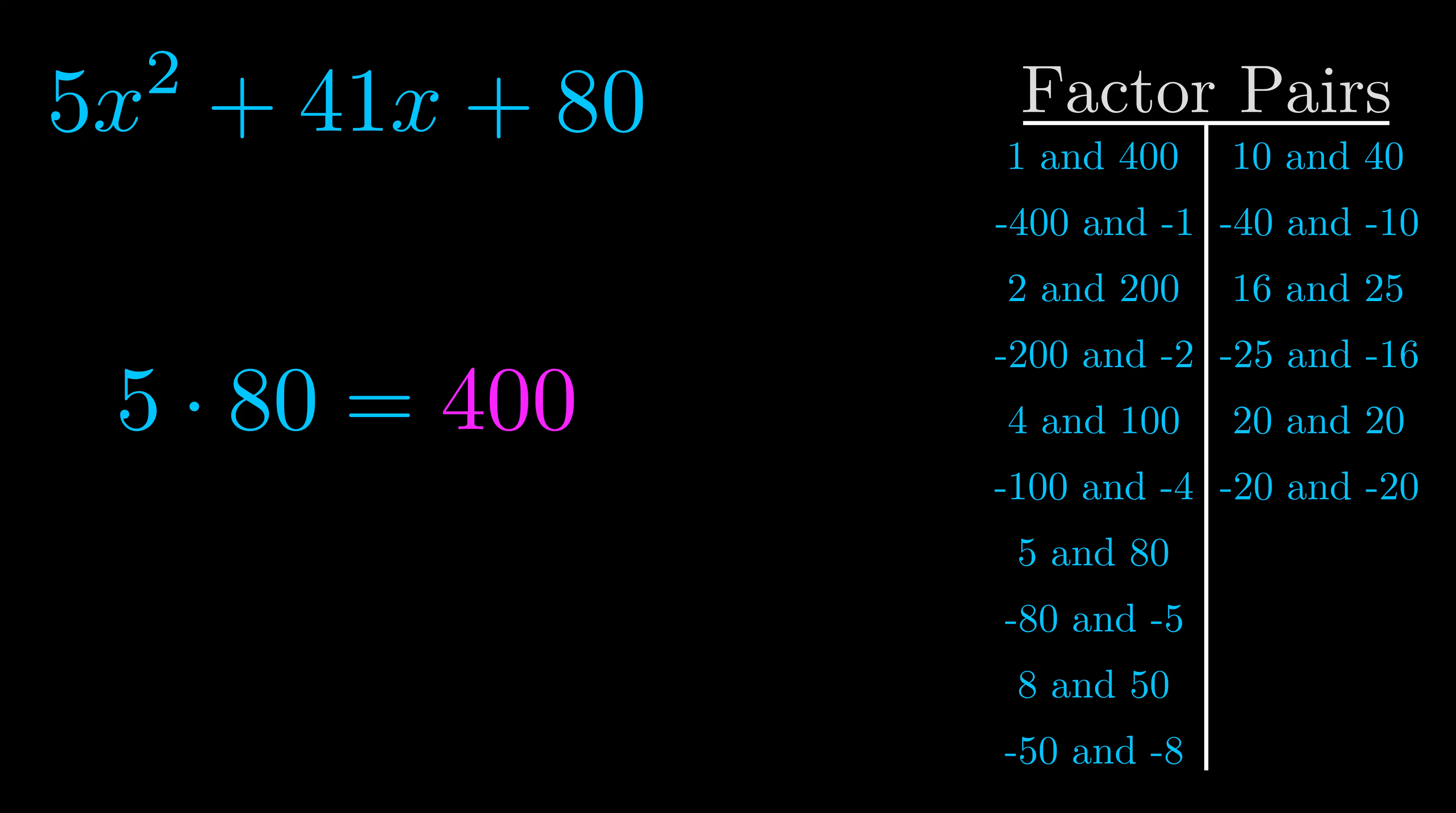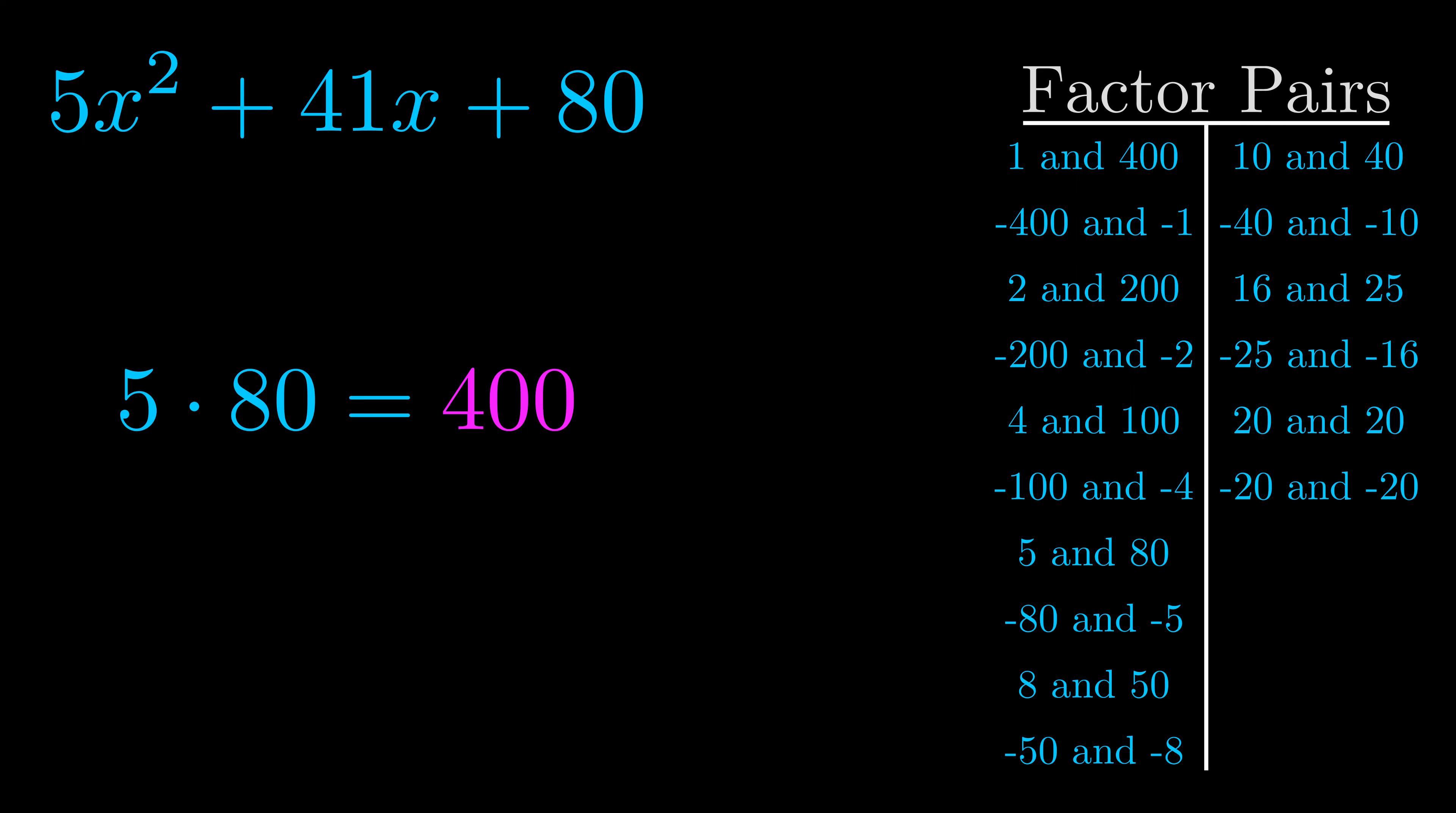Now once you have these factor pairs, the goal is to find which of these pairs adds to the b value. The b value is the coefficient on the x term. That's the middle term, the one that we haven't done anything with yet.